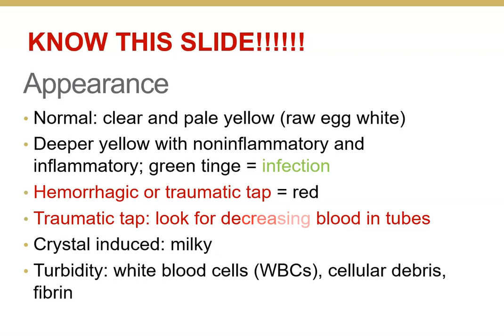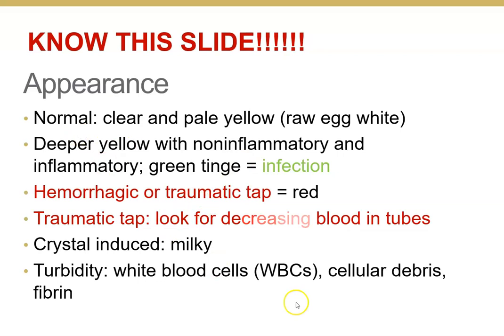Hemorrhagic arthritis or a traumatic tap will produce a red appearance. With a traumatic tap, you'll see a decreasing amount of red in successive tubes, depending on which tube was filled first from the syringe. If crystals are present, you may see a milky appearance with some turbidity, and then you look under the microscope and confirm the crystals are there.